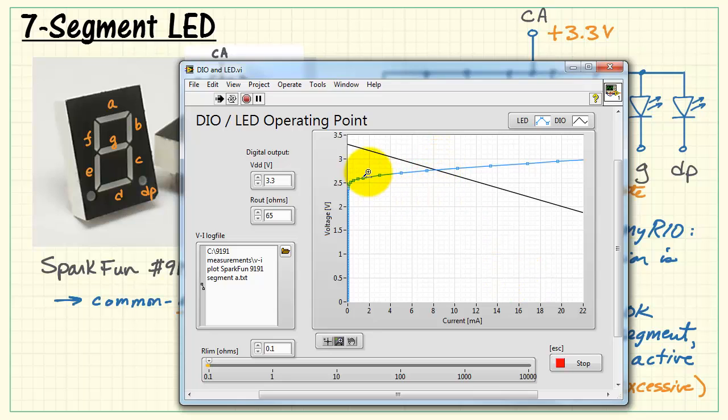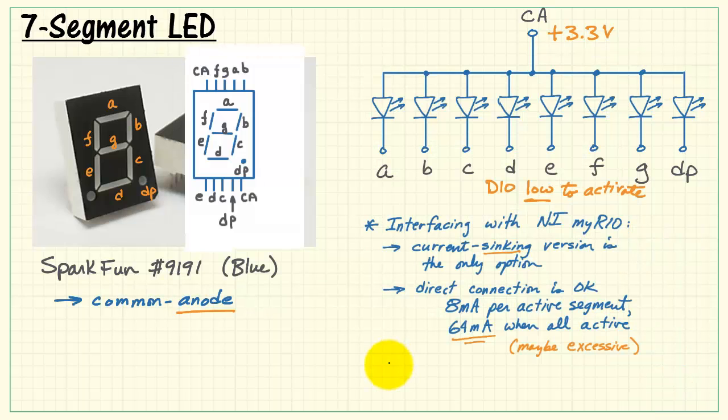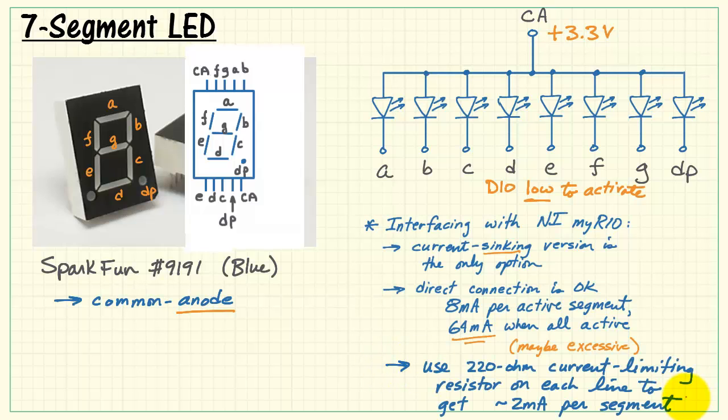It turns out that if we reduce the operating point current to about 2 milliamps, we can do that by increasing the total resistance in the circuit by adding a current limiting resistance. 220 ohms is a standard value that works pretty well. That gets our current down to about 2 milliamps per segment.